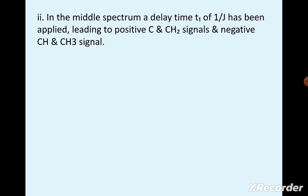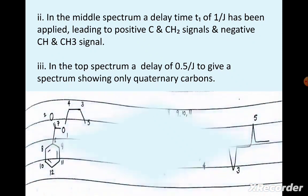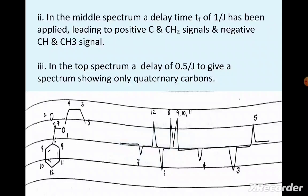In a simple APT spectrum, the bottom spectrum is a normal 13C NMR acquisition. In the middle spectrum, a delay time T1 of 1/J has been applied, leading to positive carbon and CH2 signals and negative CH and CH3 signals. In the top spectrum, a delay of 0.5/J gives a spectrum showing only quaternary carbons. This is how the signal of a compound is obtained in APT.